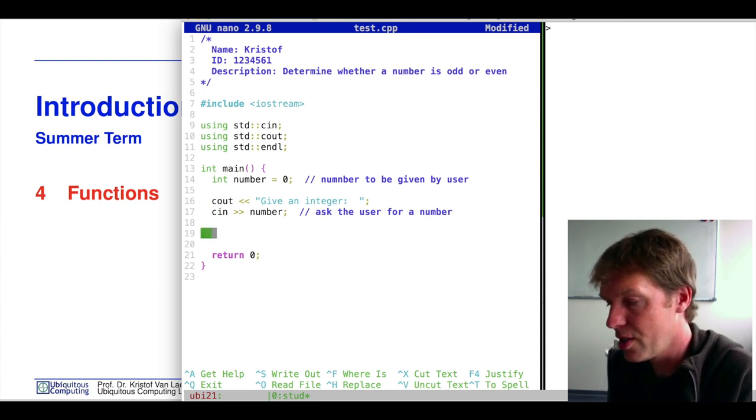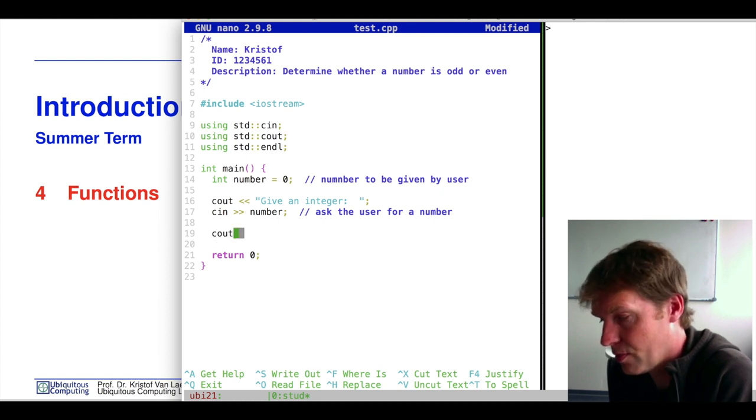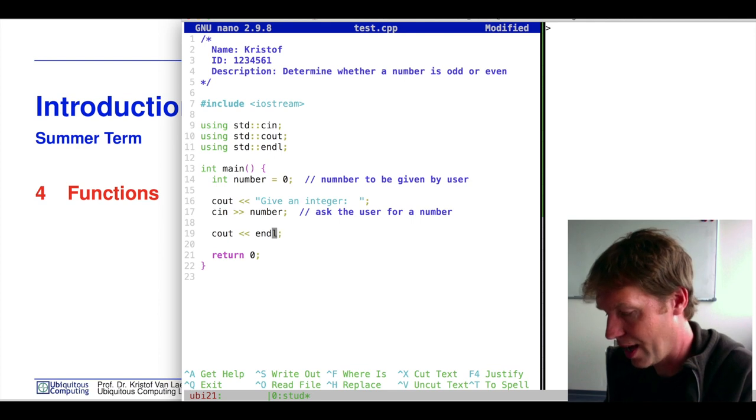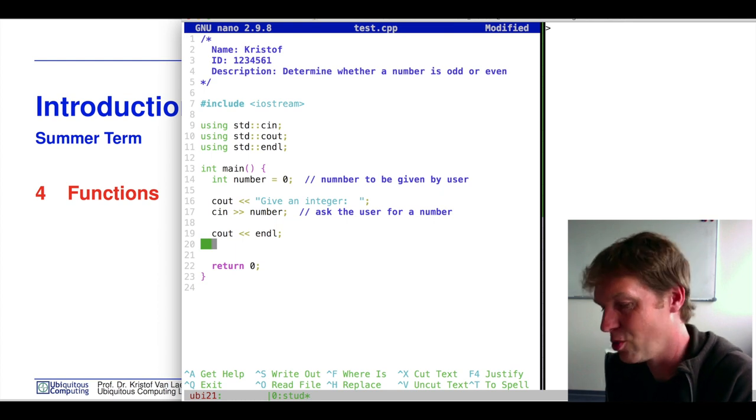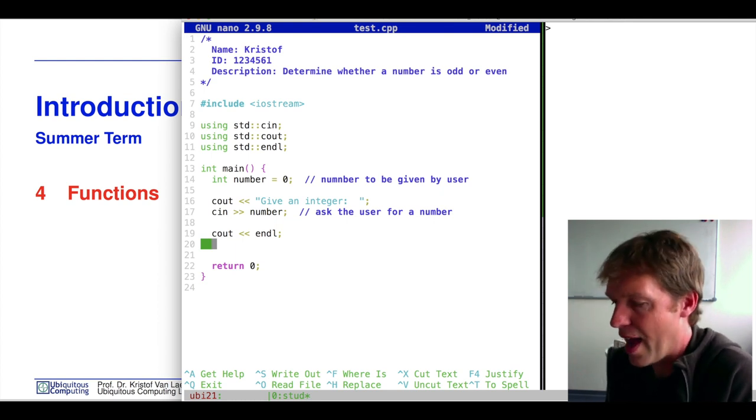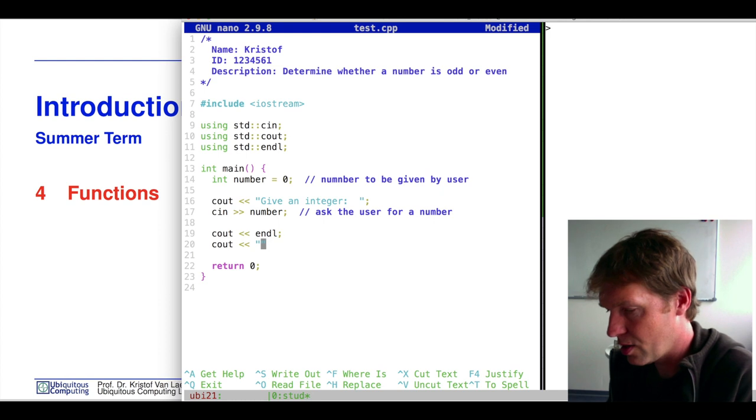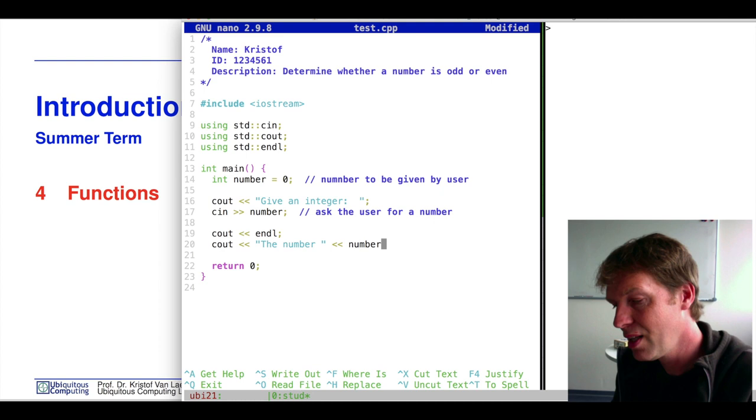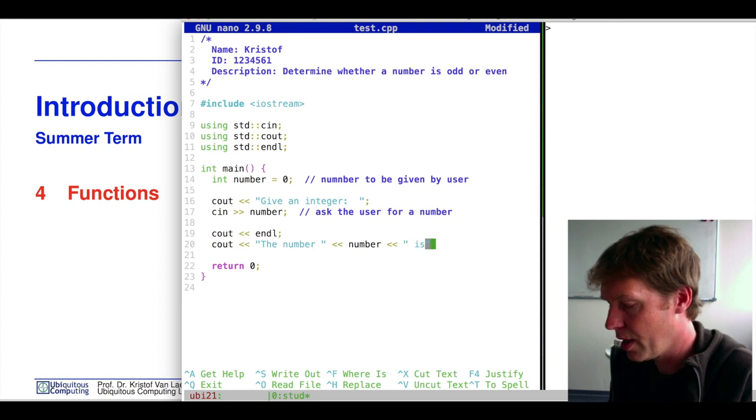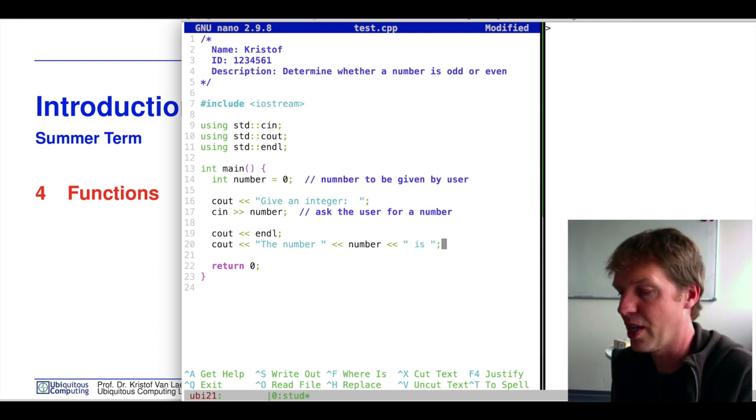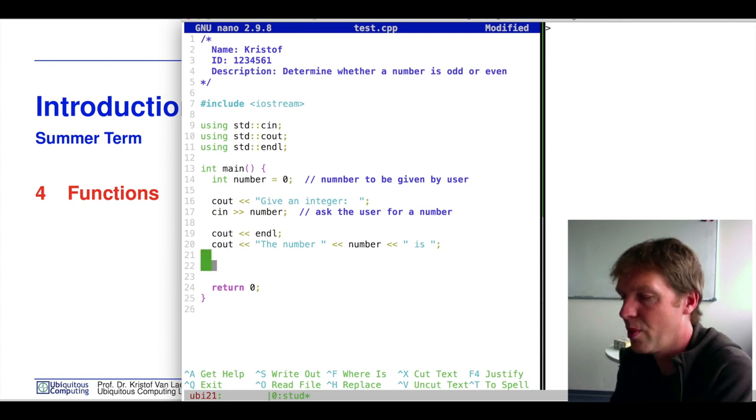Now we want to see whether this number is odd or even. Let's first go to the next line. We will basically say whether your number was odd or even. So we can say cout the number, we put the space in between, and then we can say is and then after this comes either odd or even.